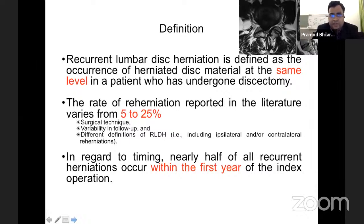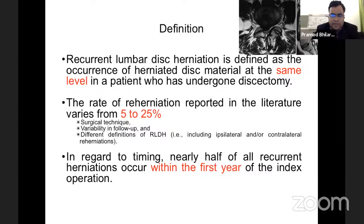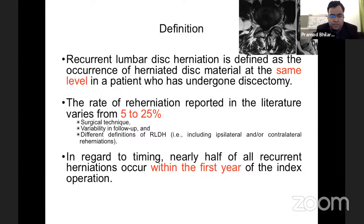Unfortunately in the literature we don't have a clear definition of what exactly constitutes a recurrent lumbar disc herniation. The accepted definition is occurrence of a herniated disc material at the same level in a patient who has undergone a discectomy. The rate of reherniation reported in various literature ranges from 5 to 25%, and it varies with the surgical technique, variability in follow-up, and the different definitions used — whether ipsilateral or contralateral herniations. Regarding timing, almost 50 to 60% occur within the first year of the index surgery. So any patient coming within one year, you should always have a high suspicion of recurrent lumbar disc herniation.